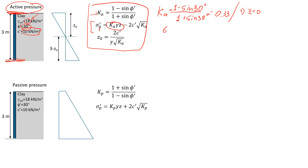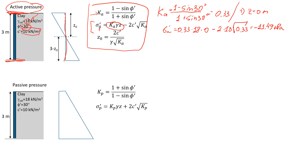The active stress at z=0 will be: the coefficient of active pressure 0.33 times unit weight 18 times 0, because we're at a level of 0 meters, minus 2 times cohesion, which is 10 kPa, times the square root of 0.33. That gives us a negative value of negative 11.49 kPa. So this stress goes to the left — negative 11.49 kPa.